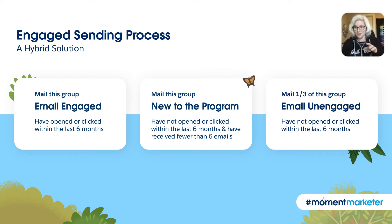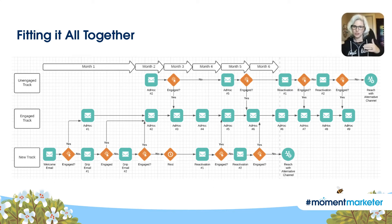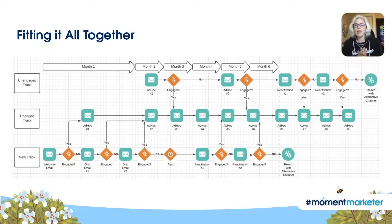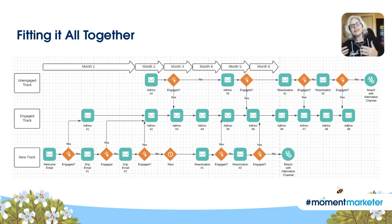This is what it looks like in words, and that's what the journey looked like. We essentially built tracks and passed people to and from the different tracks based on their engagement — either a slower cadence or a faster cadence depending on whether you engaged with the email and we determined you were interested in the types of information we were sending. The win here is that mailbox providers like it because it's consistent mail volume with a consistently high percentage of engaged subscribers. Better inbox placement means higher open rates, and ultimately what we really care about is traffic to our website — and those clicks go up too.